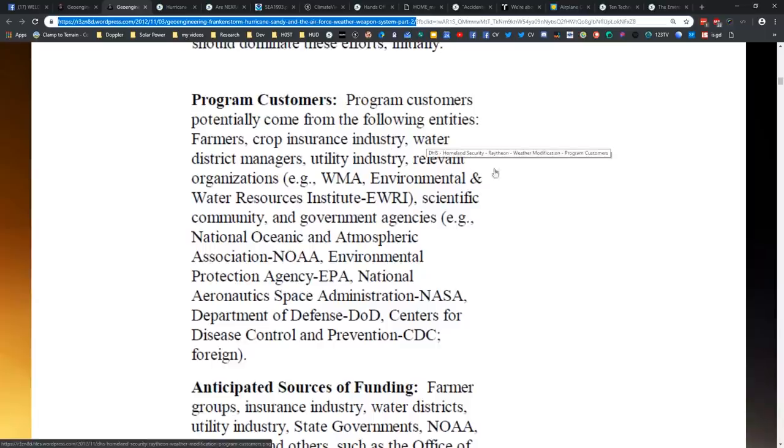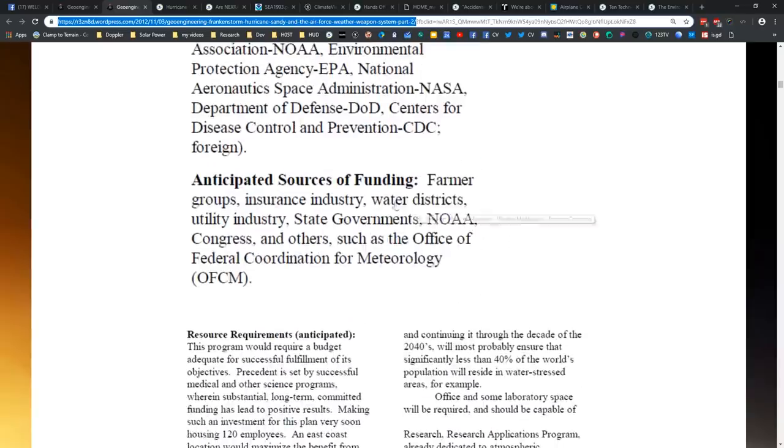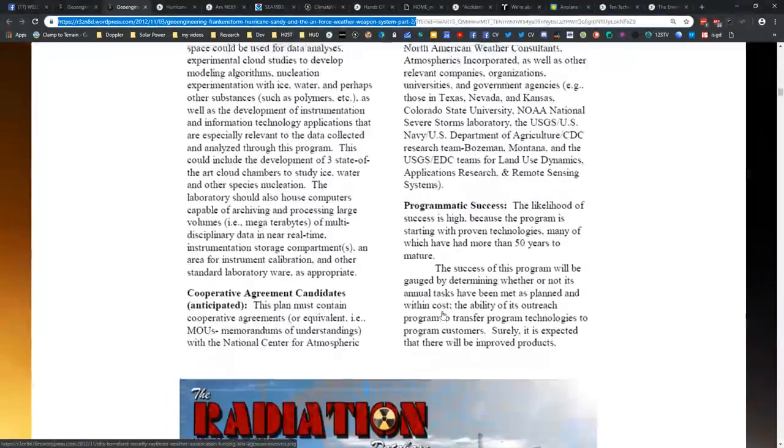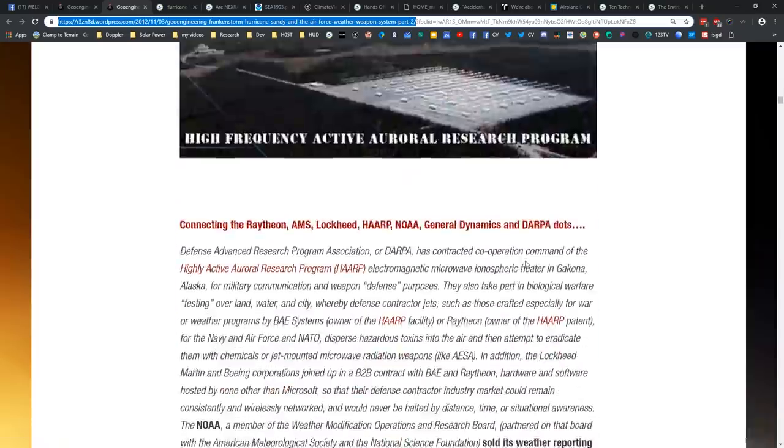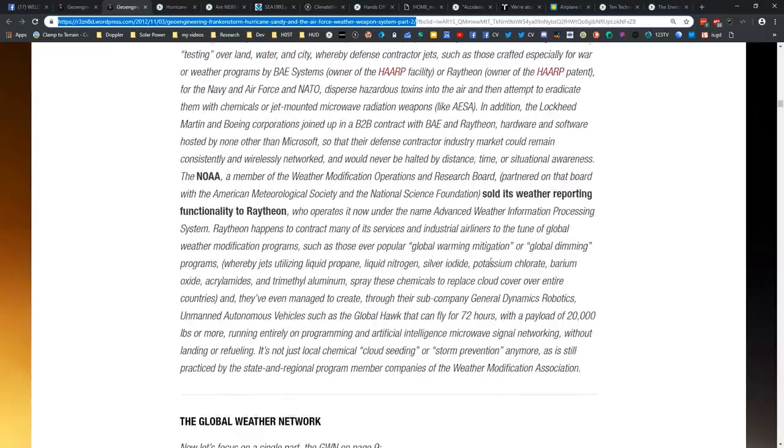On to page two, part two of this. Raytheon was at the Weather Modification Association Annual Meeting in 2005, and they have this paper where they basically talk about how they want to further weather modification capabilities, and that the knowledge base is not large enough to reliably support tornado zapping or hurricane snuffing efforts, but one day support for these efforts may be appropriately funded. Program customers: farmers, crop insurance industry, water district managers, utility industry. Relevant organizations: the Weather Modification Association, Environment and Water Resources Institute, scientific community, the government agencies NOAA, the EPA, NASA, the Department of Defense, and the Center for Disease Control and Prevention, CDC. Anticipated sources of funding: farmer groups, insurance industry, water districts, utility districts, state governments, NOAA, Congress, and others. And at the end of this paper, they thank Raytheon for supporting this future progress.